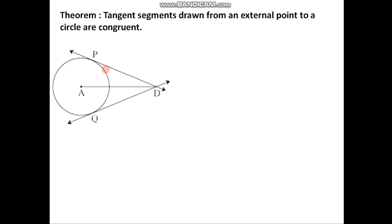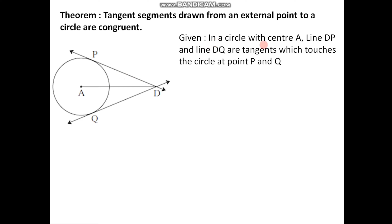Let us consider one circle given with center A. Point D is in the exterior of the circle, and from point D, line DP and line DQ are the two tangents drawn. We are given that in a circle with center A, line DP and line DQ are two tangents drawn to the circle which touch the circle at point P and point Q respectively.